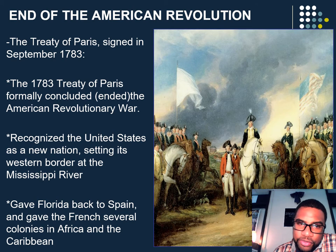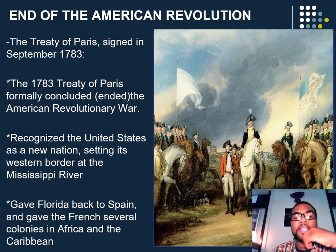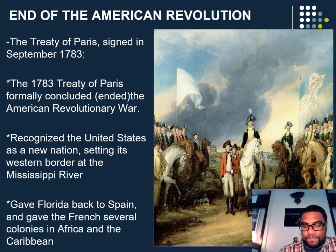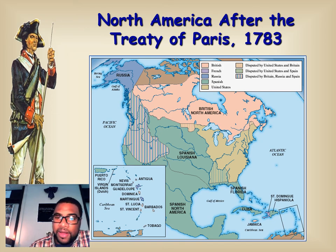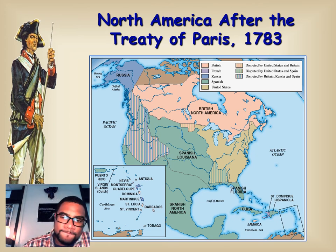The end of the American Revolution. The Treaty of Paris, signed in September 1783, formally concluded the Revolutionary War. It recognized the United States as a new nation, setting its western border at the Mississippi River. It gave Florida back to Spain and gave the French several colonies in Africa and the Caribbean. After the Treaty of Paris, you can see on the map that just above Louisiana was the border of the new United States of America.